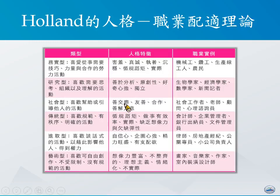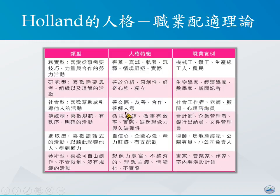社会型的人通常具备的特质可能是较为善交际、友善、喜欢跟别人合作，并且有较高的能力去了解他人的意思。这类的职业当中可能包括社会工作者、老师、顾问，以及心理咨询员等等。